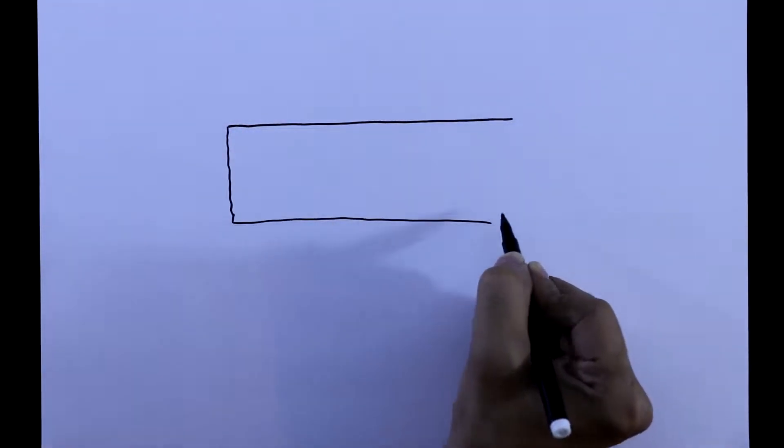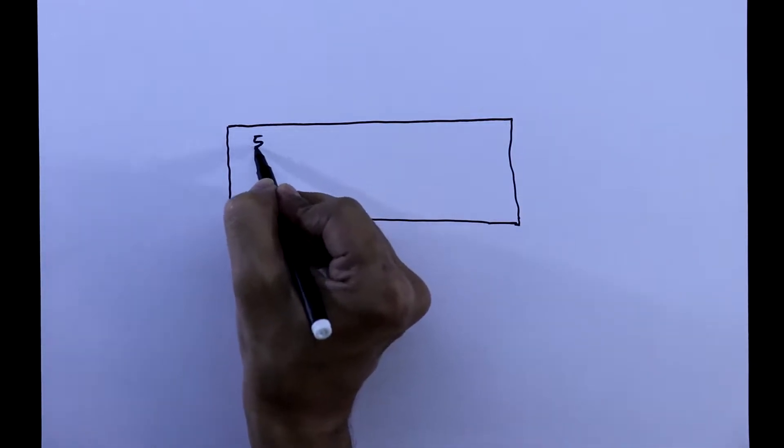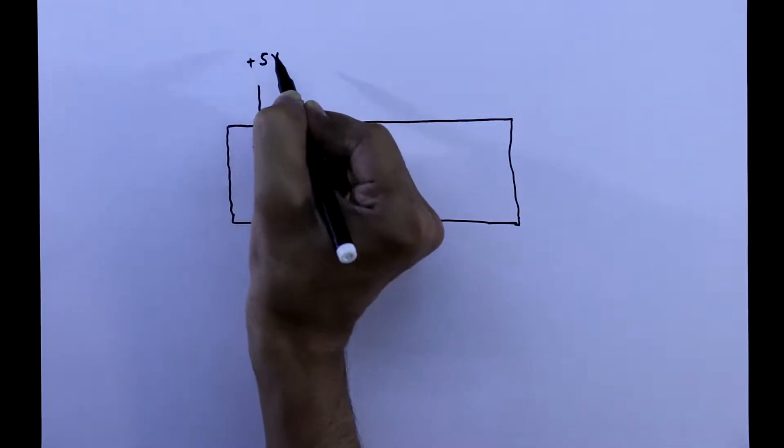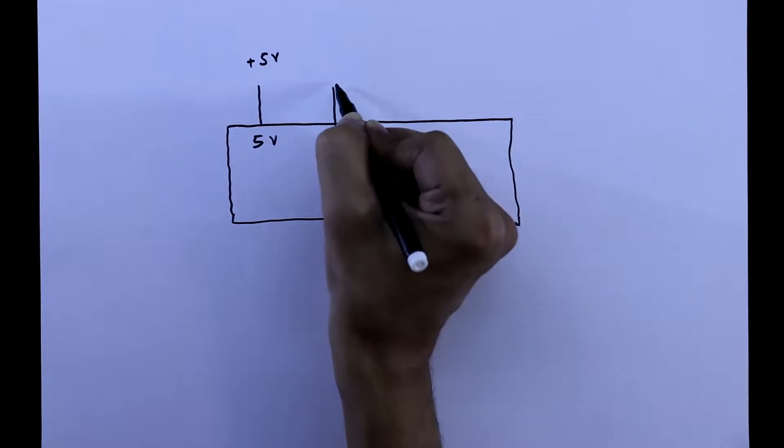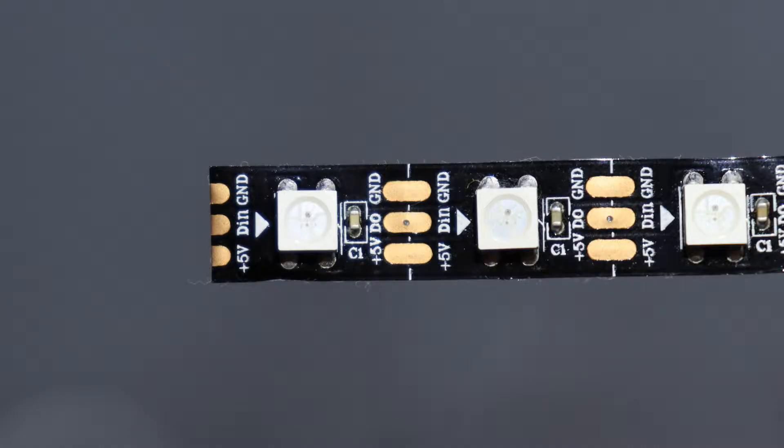To make this I am using Arduino Nano. Its 5 volt pin is connected to the plus 5 volt and ground is connected to the ground. This is the LED strip we are going to use. It is WS2812.